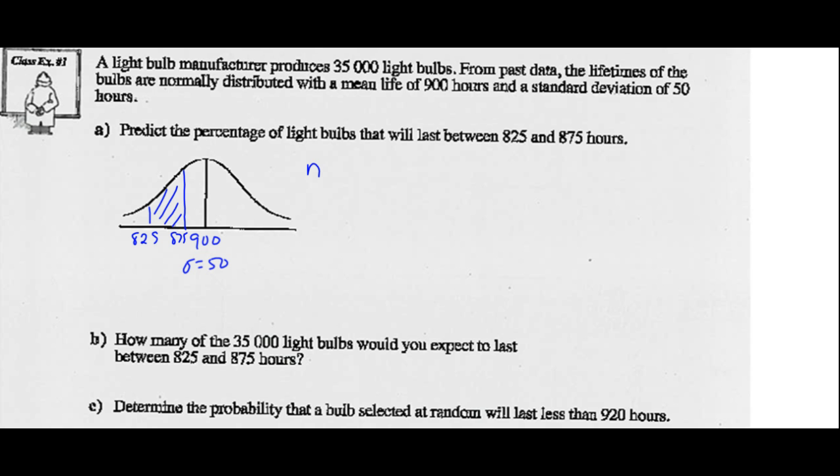So with our calculator, we're going to go to normal CDF. The lower limit is 825, upper limit is 875. The mean is 900, and the standard deviation is 50. So you type that into your calculator, you're going to get the correct answer: 0.2417 and so on.